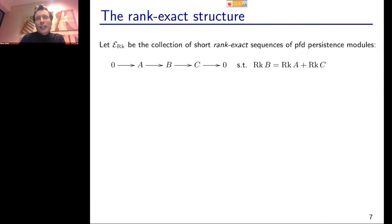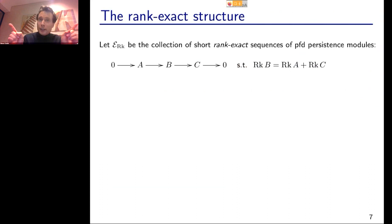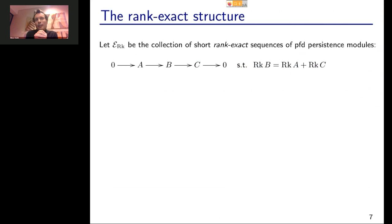The trick is to restrict attention to only those short exact sequences on which the rank invariant is additive — let's call this collection E_rank. The reason is that we want to obtain rank decompositions from resolutions, and to do that we need resolutions over which the rank invariant acts additively. Otherwise a resolution will not give a decomposition of the rank invariant.